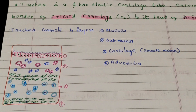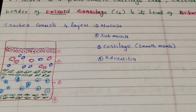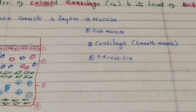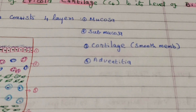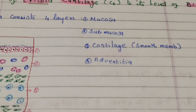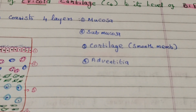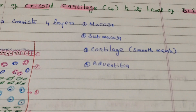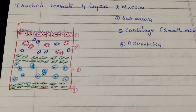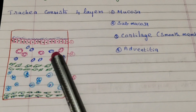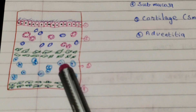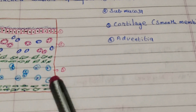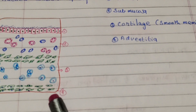The trachea consists of four layers. The first layer is the mucosa. The second layer is the submucosa. The third layer is the cartilage and smooth muscle layer. The fourth layer is the adventitia.